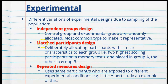Another type of experimental design is a matched participants design. This is when we deliberately allocate participants with similar characteristics to each group. For example, the two highest scoring participants on a memory test — one is placed in group A, the other in group B. We match the pairs and purposefully put one in group A and the other in group B. This may be necessary, especially in memory tests, to make sure groups aren't accidentally biased.